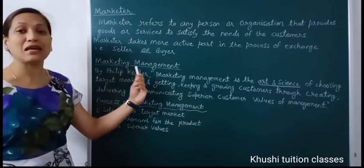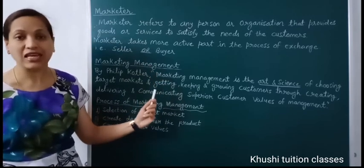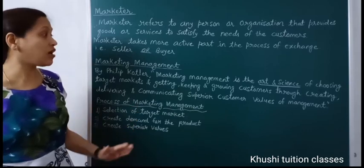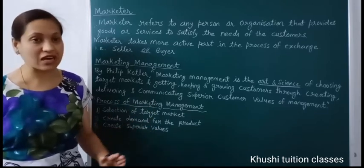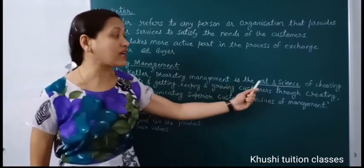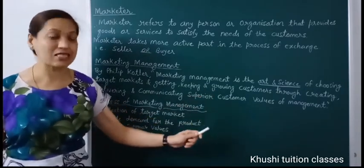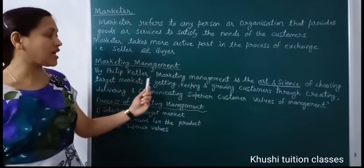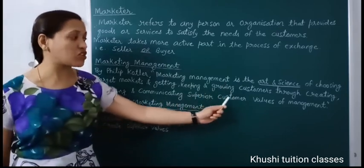Now we come to the definition of marketing management. Just as in Chapter 1 we learned that a manager must perform five functions to manage anything — planning, organizing, staffing, directing, and controlling — similarly, to manage every marketing activity, a manager must fulfill all these functions. The definition given by Philip Kotler: marketing management is the art and science of choosing target markets and getting, keeping, and growing customers through creating, delivering, and communicating superior customer values.